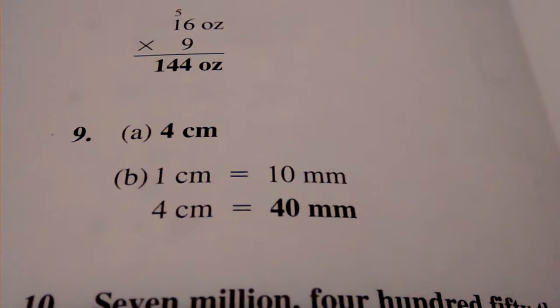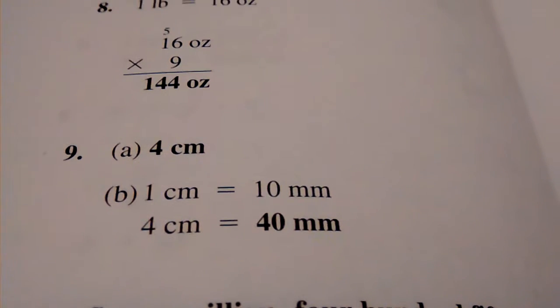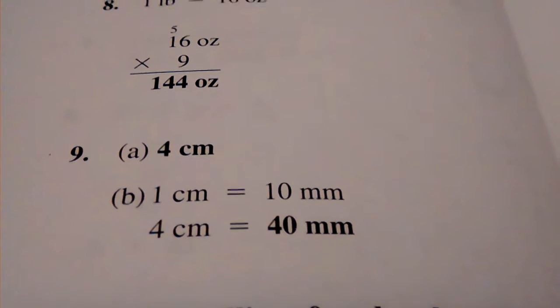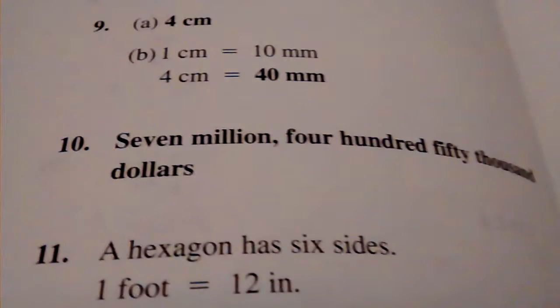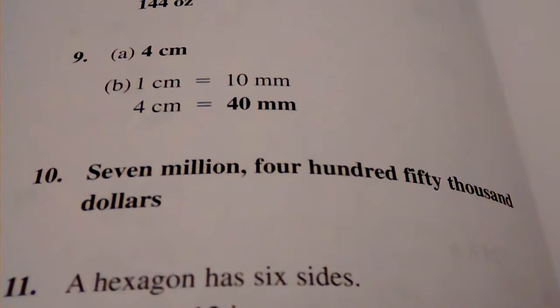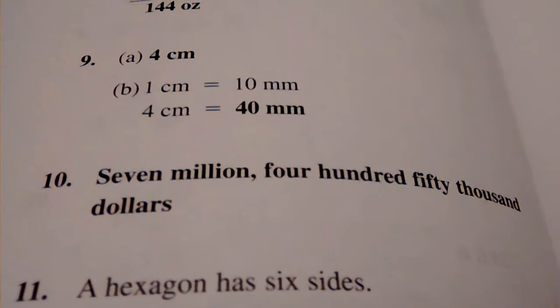Number 9, 44 millimeters, that's B. A is 4 centimeters, B is 40 millimeters. Number 10, $7,450,000.